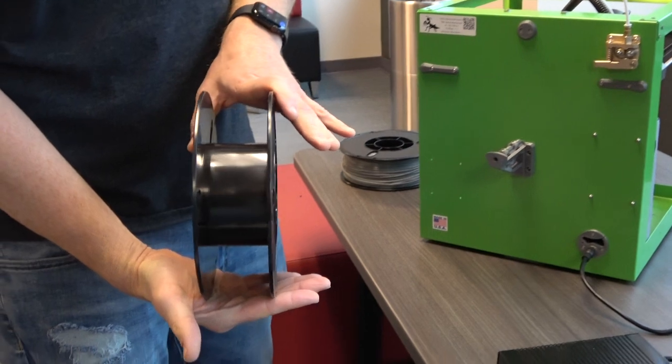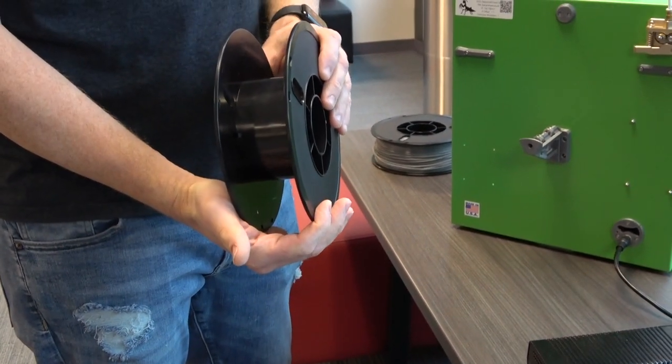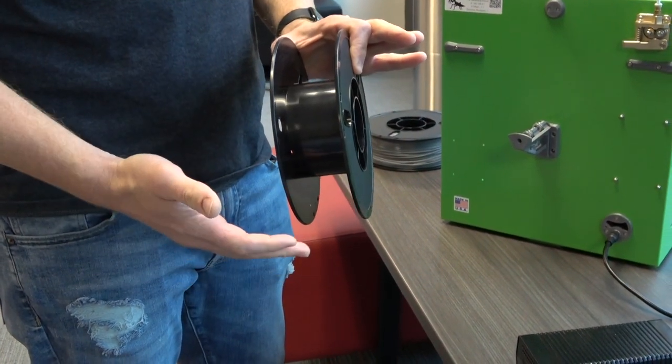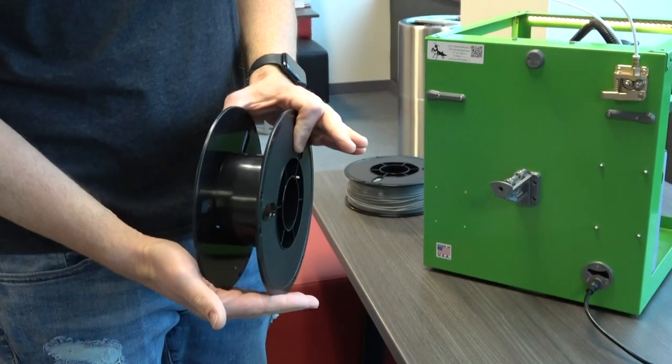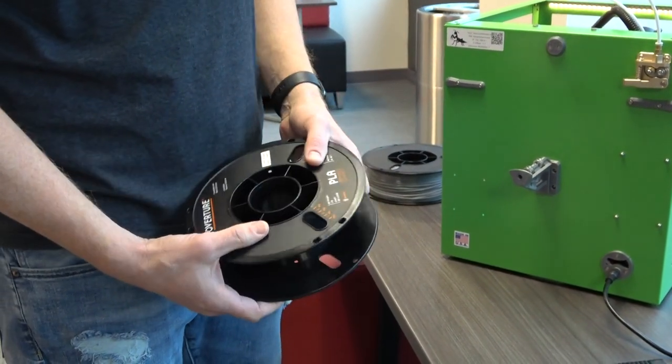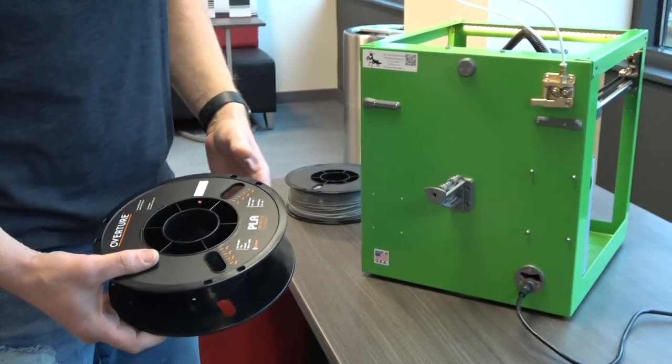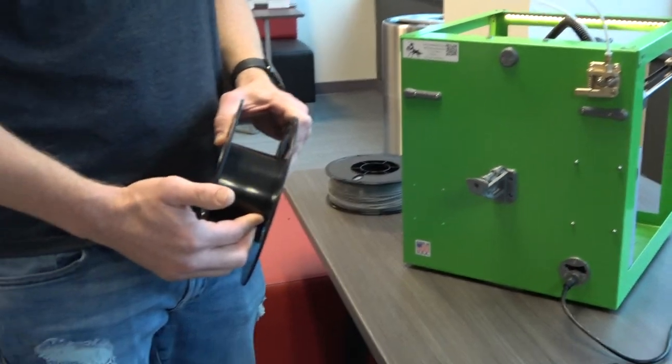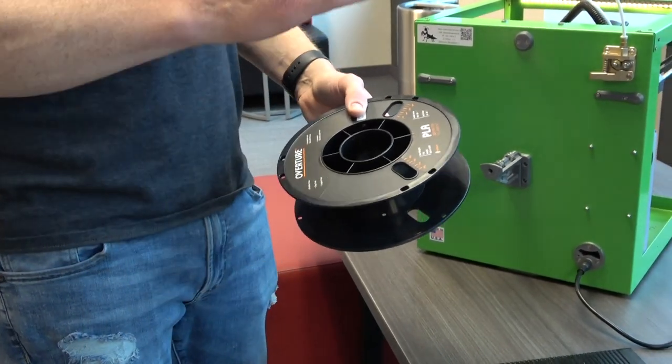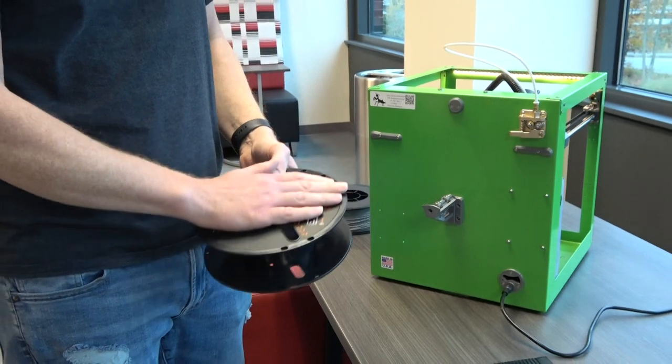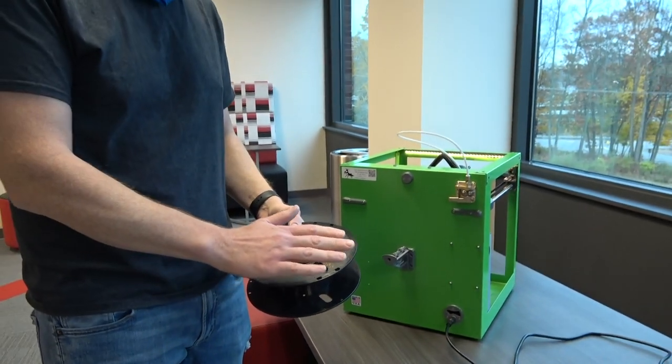This is one situation where you're going to have to use OctoPrint to take care of the problem. The other situation would be if your filament snapped, which does sometimes happen. I recently had a roll of Overture that just for some reason had a bunch of breaks throughout the roll.